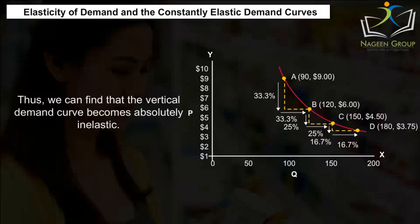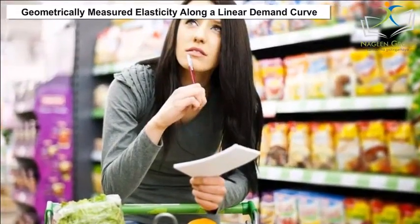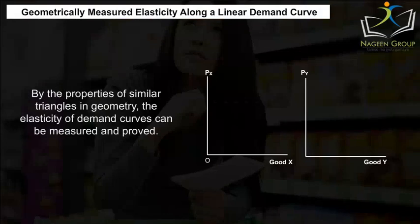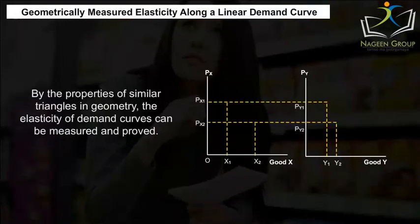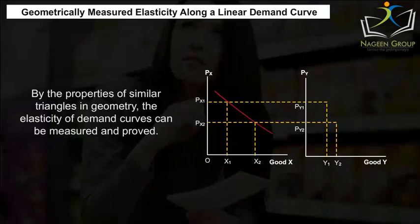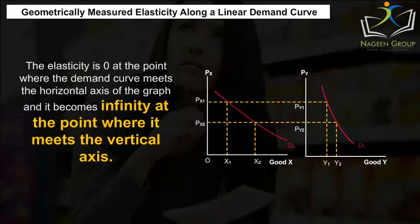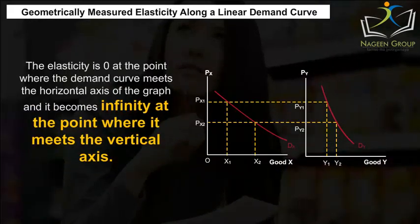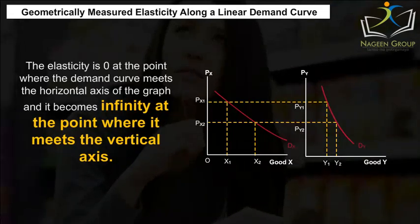Geometrically Measured Elasticity Along a Linear Demand Curve. By the properties of similar triangles in geometry, the elasticity of demand curves can be measured and proved. The elasticity is zero at the point where the demand curve meets the horizontal axis of the graph, and it becomes infinity at the point where it meets the vertical axis.